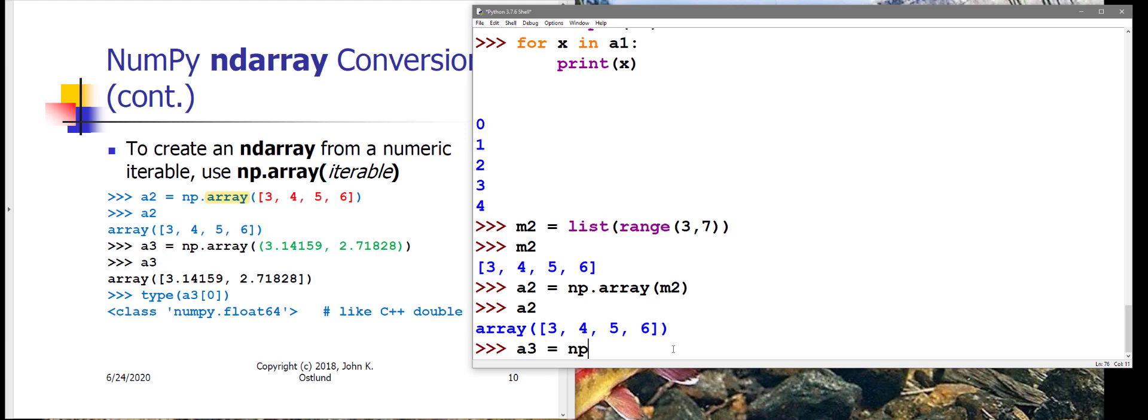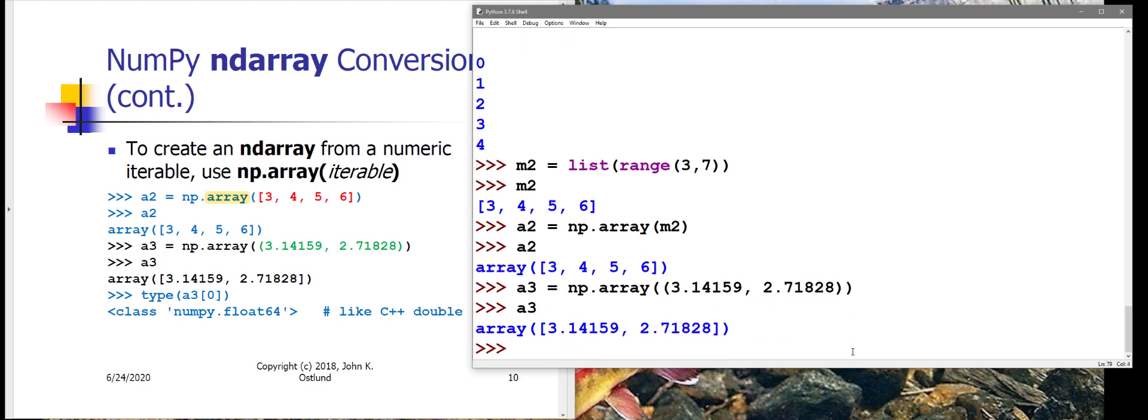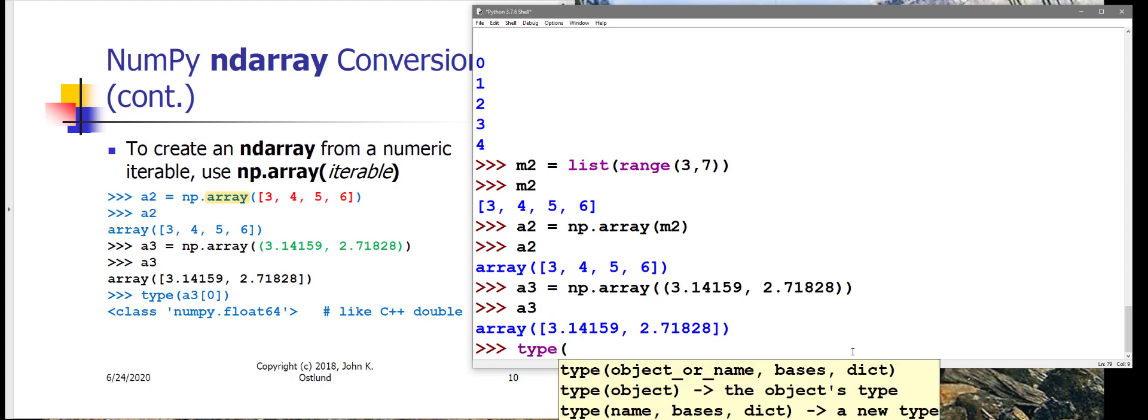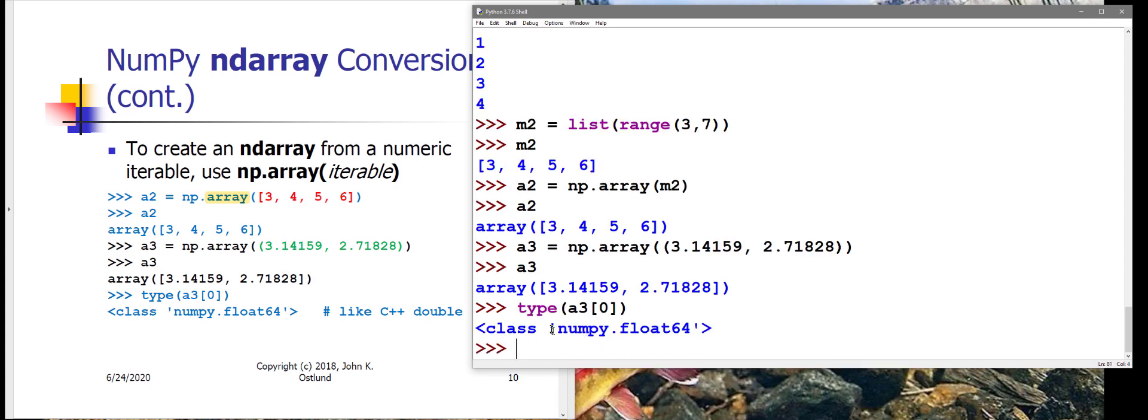Here in A3, rather than a list, I'm using a tuple. I'm going to just manually type in this tuple. So there's my tuple. This is a tuple of two floating point values, the value of pi out to five decimal places and the value of E out to five decimal places. And this also works fine. Now I have an ndarray containing two floating point values. These floating point values have the data type numpy.float64 as opposed to just plain old float.